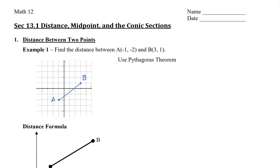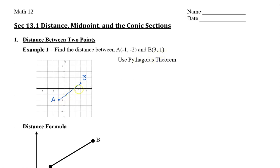Here we have the points A, which is at negative 1, negative 2, and B, which is at 3, 1. I've taken the liberty to plot this on a grid so that visually we can see how to actually find the distance. I'm going to draw a vertical line from B down to where A is, and then from A I'm going to draw a horizontal line to where B is. And now I've created a right triangle.